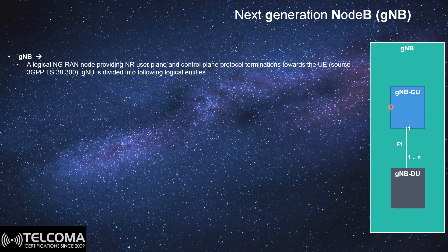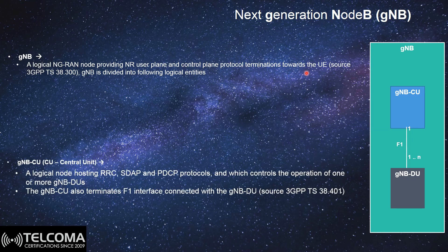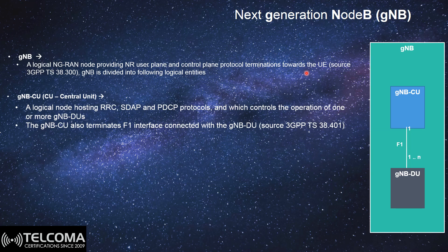The gNodeB is becoming a logical NG-RAN node providing the new radio user plane and control plane termination towards the UE. The logical entities are the Central Unit and the Distributed Unit. The Central Unit focuses on the upper layers — specifically the RRC layer in the control plane, and the SDAP and PDCP protocols on the user plane. SDAP is a new protocol in the standalone network. The Central Unit controls the operation of one or more Distributed Units, and it terminates all the F1 interfaces connected with the gNodeB Distributed Unit as per 3GPP 38.401.